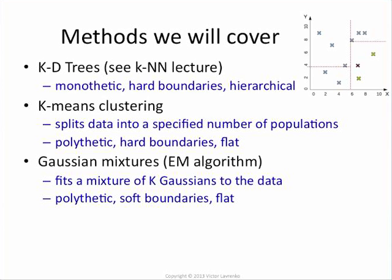We'll talk about Gaussian mixtures. They're really similar to KMeans — they're not presented that way, they're presented in a totally different way usually. You're fitting Gaussians to the data. But really, Gaussian mixtures are identical to KMeans. The only thing that is different between them: in KMeans clustering you have hard boundaries, and in Gaussian mixtures you have soft boundaries. So an element can belong to more than one Gaussian, but it typically only falls into one KMeans cluster.